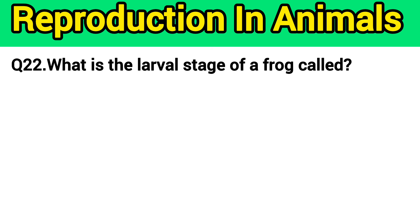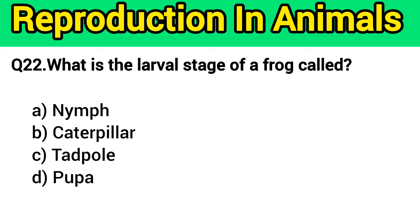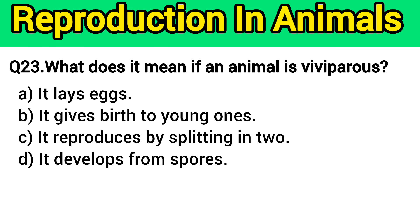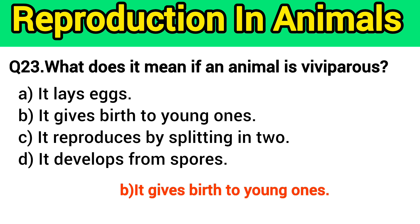Question number 22: What is the larval stage of a frog called? The right answer is option C — tadpole. Question number 23: What does it mean if an animal is viviparous? The right answer is option B — it gives birth to young ones.